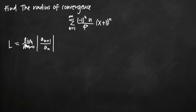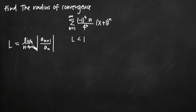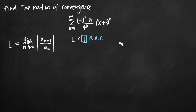What the ratio test tells us is that if we find this value L and L is less than 1, then we know that the series converges on that interval. So all we have to do is find this value for L, set it less than 1, and that's going to tell us that the series converges. As long as we have L in a specific form, we can call the value on the right-hand side the radius of convergence. So let's start with finding this value for L using the ratio test for convergence.